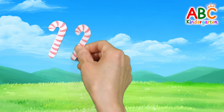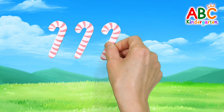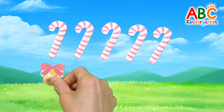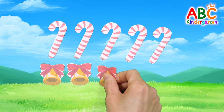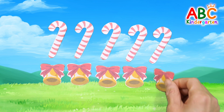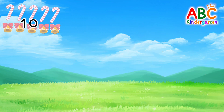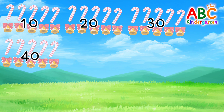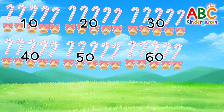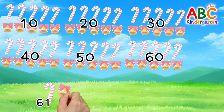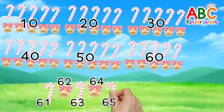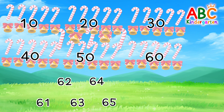Let's count the numbers. 1, 2, 3, 4, 5, 6, 7, 8, 9, 10, 20, 30, 40, 50, 60, 61, 62, 63, 64, 65. There are 65 canes and bells in total. Wow! Great job! Good job.